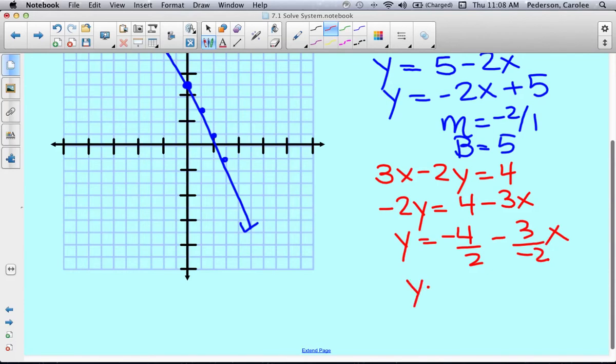And simplify it, negative 2. And then negative 3 divided by negative 2 is 3 halves. So then my slope is 3 halves x minus 2.